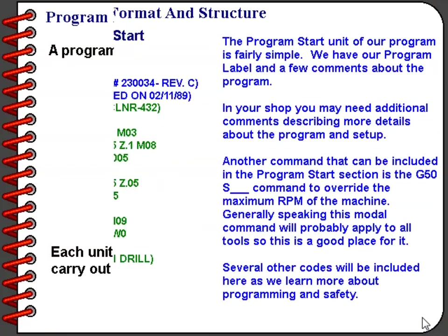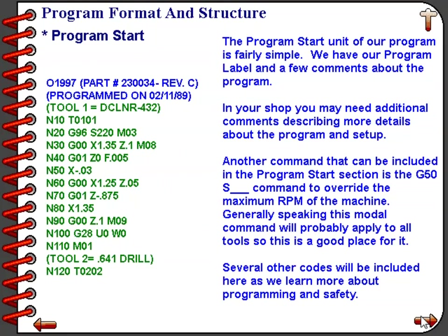The program start section contains the program label. Also included here is any descriptive data covering the program, such as the part number, the revision, the date the program was written, and perhaps the programmer's name. Your company will probably have many other requirements for this area with regard to comments.